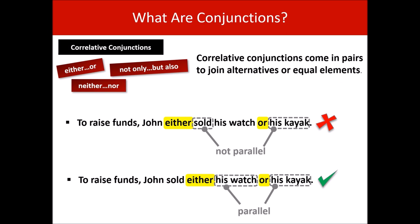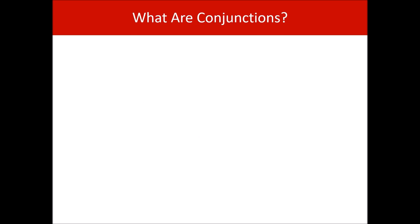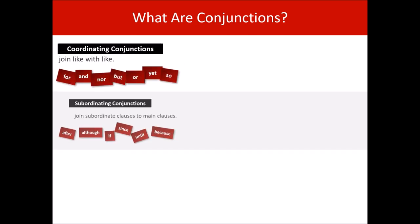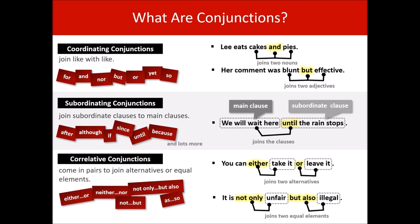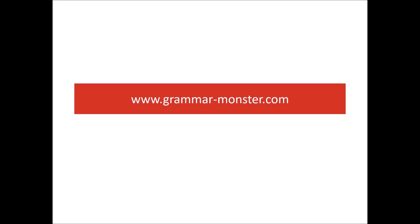That is everything about correlative conjunctions, ending this video on conjunctions. Here is a summary slide covering coordinating conjunctions, subordinating conjunctions, and correlative conjunctions. You can pause this video here to remind yourself of the content covered. Thanks for watching — be sure to check out other videos on GrammarMonster.com.